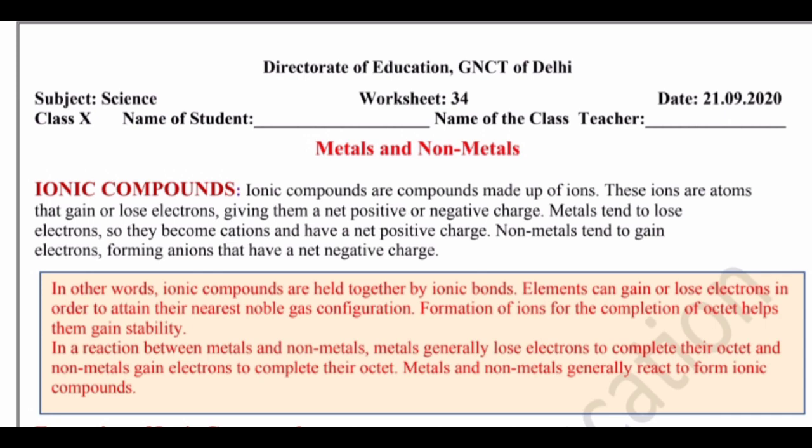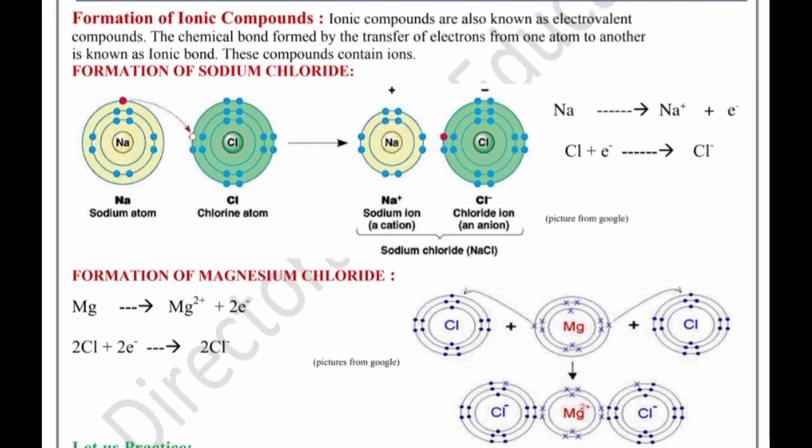To get the nearest octet and to get the configuration of noble gas — kyunki noble gas react nahi karti hai to unka jaisa configuration ban jaega to woh bhi react nahi karenge, aur stability aa jaegi. Formation of ionic compound: ionic compounds are also known as electrovalent compounds. The chemical bond formed by the transfer of electrons from one atom to another is known as ionic bond. These compounds contain ions. Formation of sodium chloride mein transfer of electron se — ek electron dega aur doosra receive kar lega.